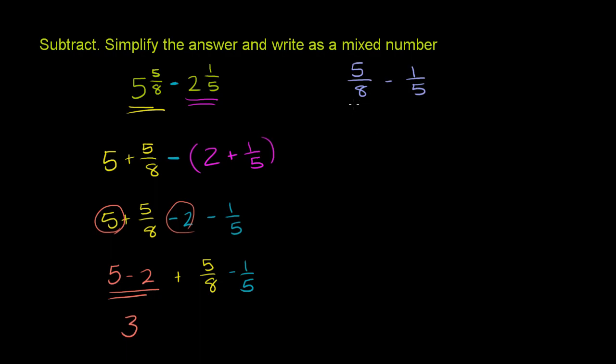And if we do a prime factorization of 8, you get 2 times 4. 4 is 2 times 2. So 8 is 2 times 2 times 2. 5 is just 5, because it is a prime number. So the least common multiple of 8 and 5 has to have a 5 and 3 twos in it, or another way of saying it has to be 5 times 2 times 2 times 2, which is the same thing as 5 times 8. So the least common multiple is 40.